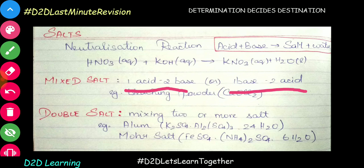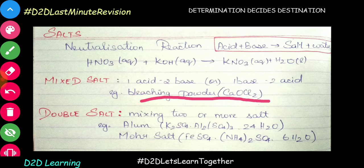So we will talk about mixed salt. In this mixture, two acids are combined. For example, bleaching powder — CaOCl2 — is a mixed salt. This is the base. Now, double salt: when there is a variety of different salts, we get a double salt. Mixing two or more salts together forms a double salt.